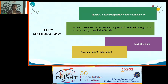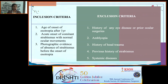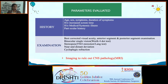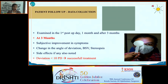The aim of the study was to assess clinical characteristics, causes, modes of treatment, and outcomes in patients with acute comitant esotropia. This was a hospital-based prospective observational study with a sample size of 30, conducted at the pediatric ophthalmology department from December 2022 to May 2023. Inclusion criteria included age of onset after one year, acute-onset comitant strabismus with normal ocular movements, and photographic evidence of no prior strabismus. Exclusion criteria included history of eye disease, prior ocular surgery, amblyopia, head trauma, or systemic disease. All patients underwent cycloplegic refraction and neuroimaging to rule out CNS pathology.